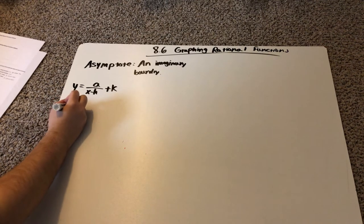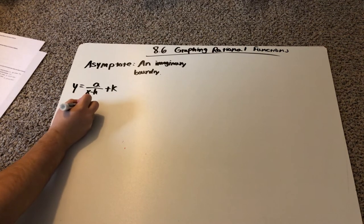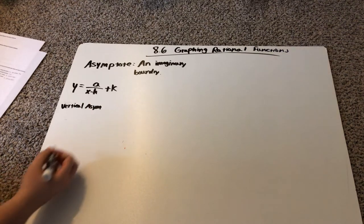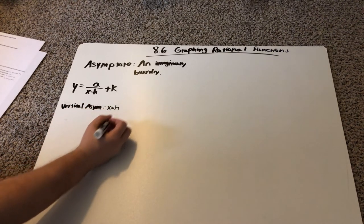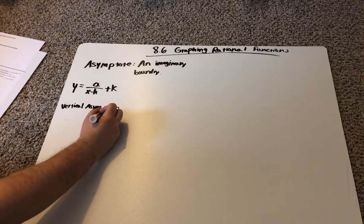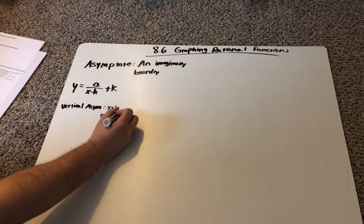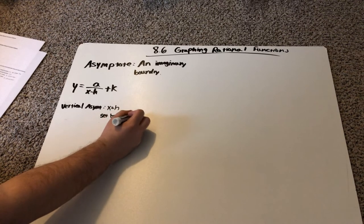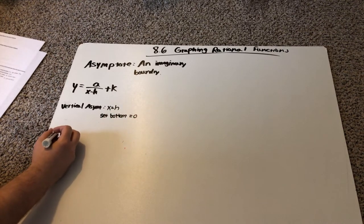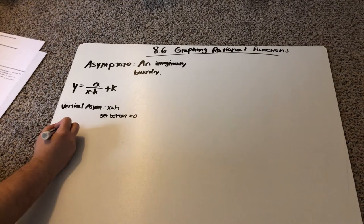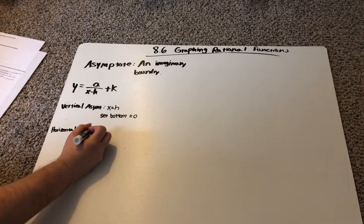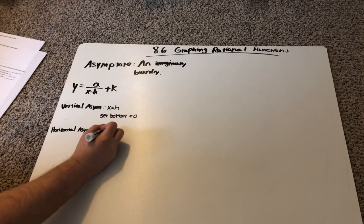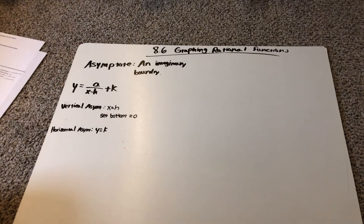So for vertical asymptotes, it is x is equal to h. And for this, we just want to set the bottom equal to zero. We have the horizontal asymptote, which is y equals k. So we just take a look at this last letter and set it equal to y.